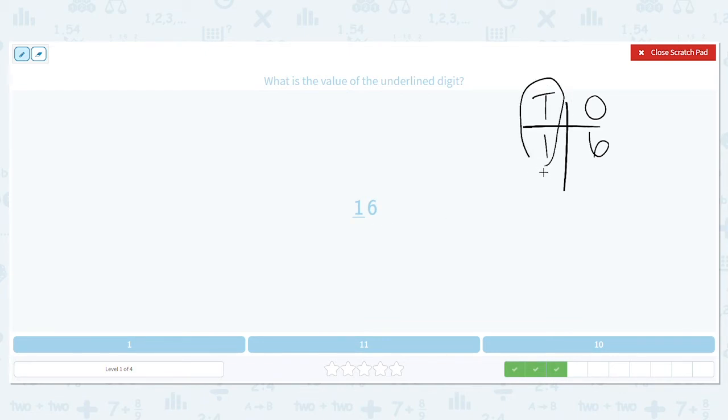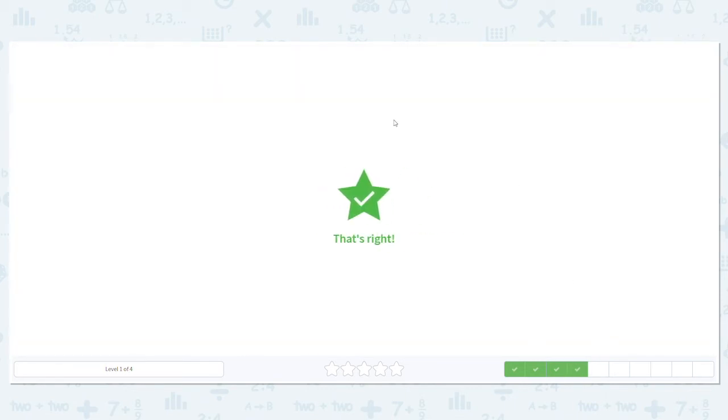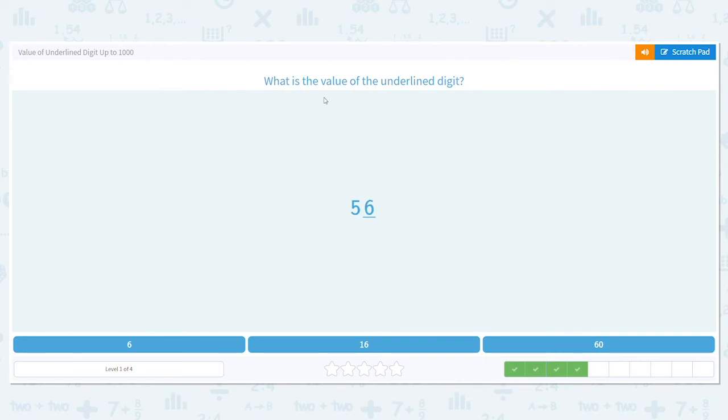How many groups of tens do we have? The digit is one. So what does that mean? Is it valued at one or is it valued at ten? It's in the tens place, so that means it's worth ten.